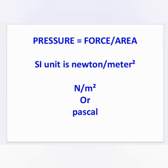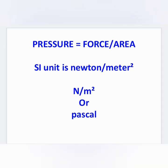The SI unit of pressure is either Newton per meter square or Pascal. As pressure increases, the area occupied decreases; when area is increased, the pressure is decreased, because area is in the denominator. The force acting on the body is the same, but when the area occupied is larger the pressure is lesser, and if the area occupied is lesser then the pressure is more.